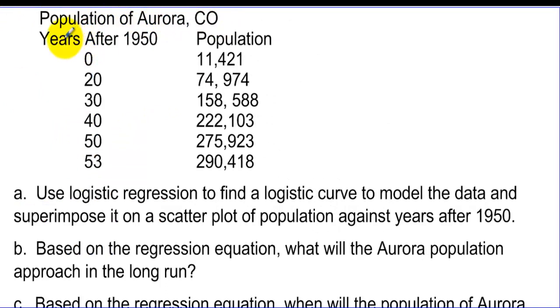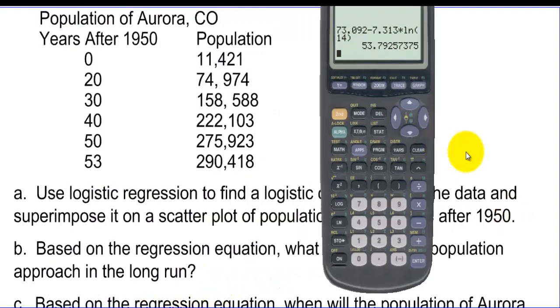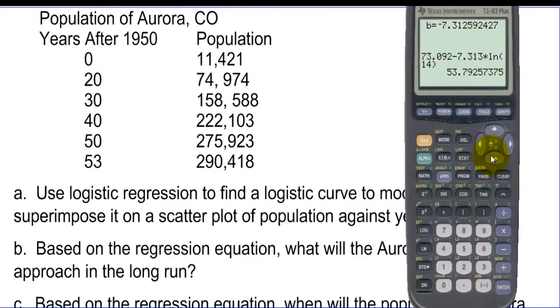Population of Aurora, Colorado. Years after 1950 and we have the population. Use logistic regression to find a logistic curve to model the data and superimpose it on a scatter plot of population against years after 1950. Let's open up our calculator. We'll type this into L1 and L2. So we want to edit. We can delete all these.